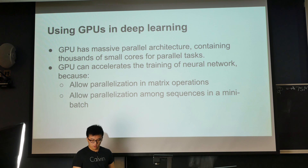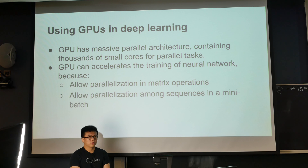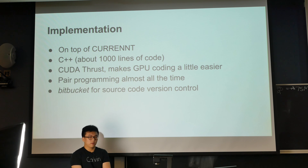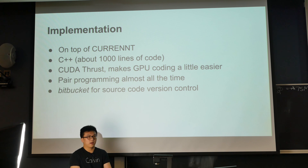Beyond theory, we need to care about the system. Using GPUs to train neural networks has become an industry standard because deep learning training time is very long and GPUs massively accelerate the process through parallelization in matrix operations and across sequences in a mini-batch during stochastic gradient descent. Our implementation is on the open-source framework Currennt in C++. We implemented the CTC algorithm in about a thousand lines of code, using CUDA Thrust to simplify coding and pair programming to make development more efficient, plus Bitbucket for version control.